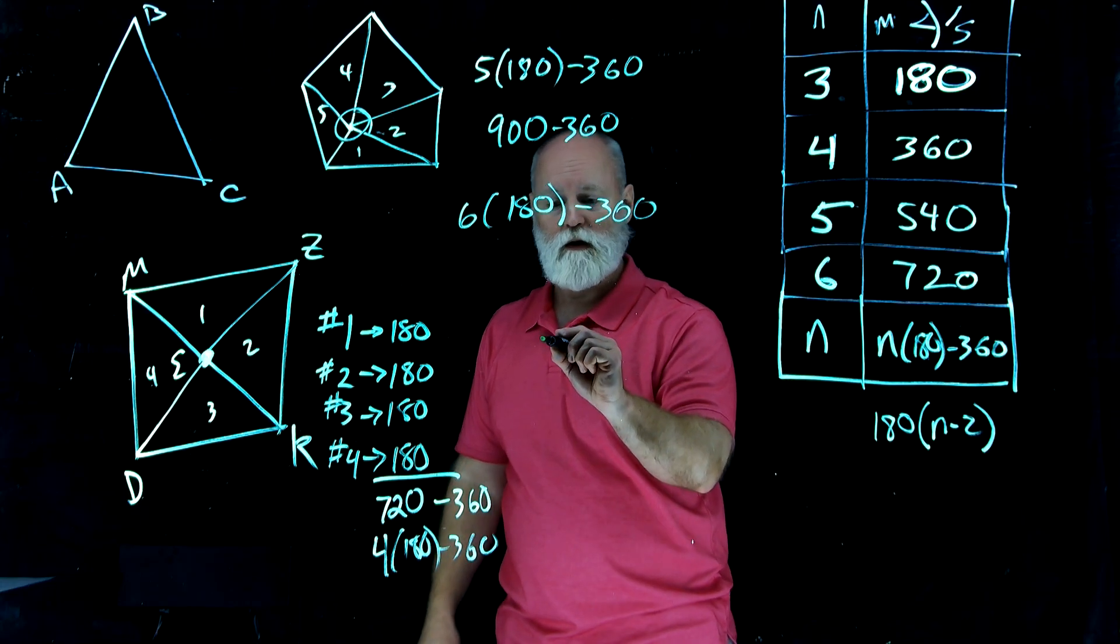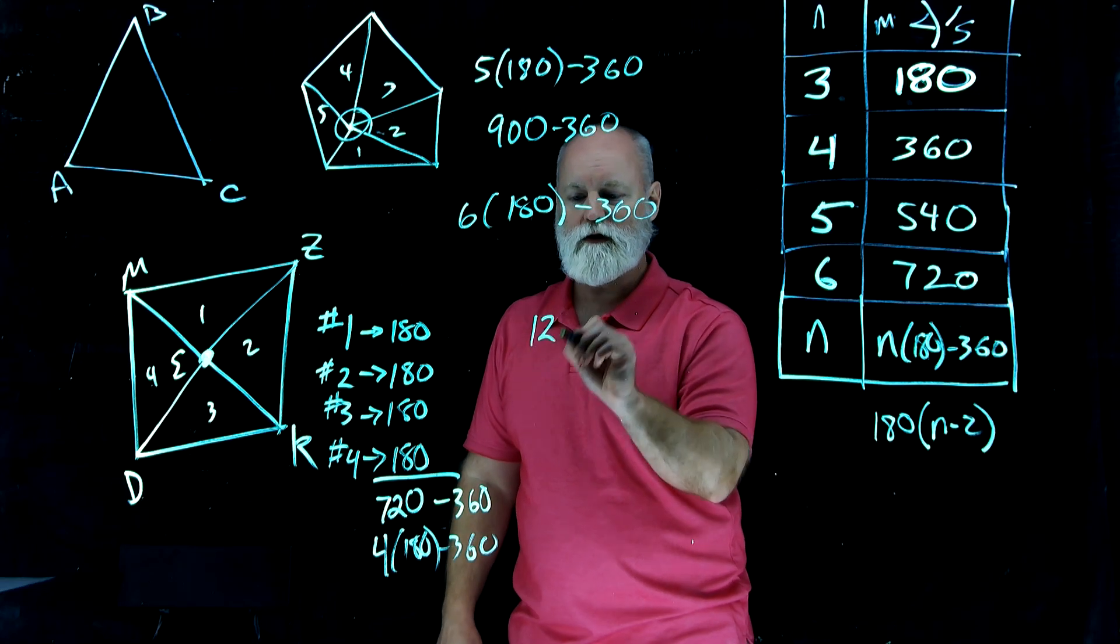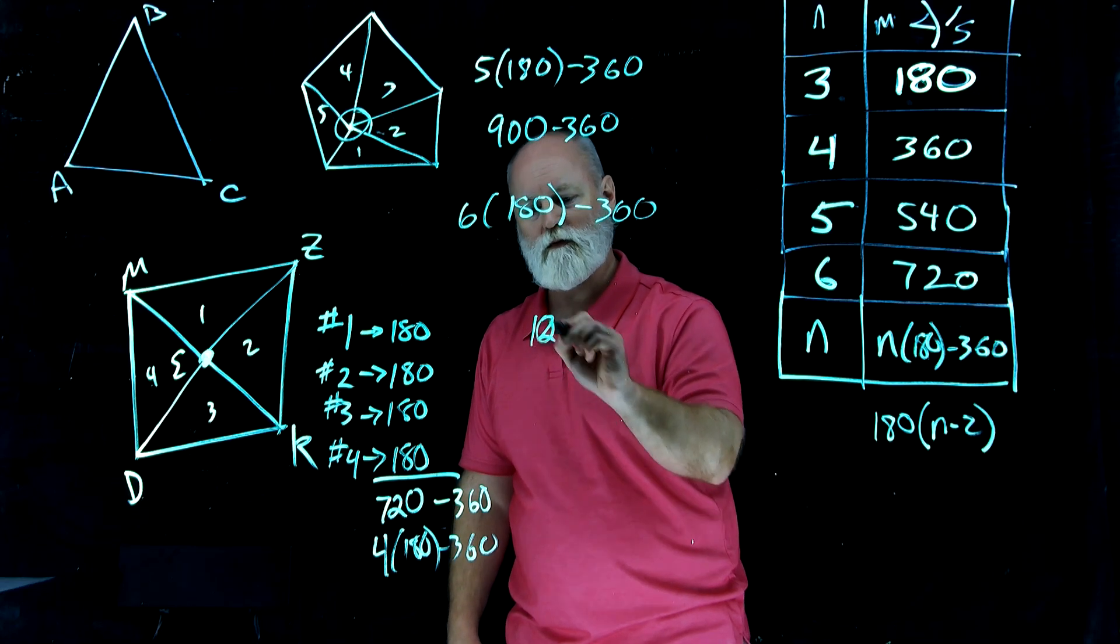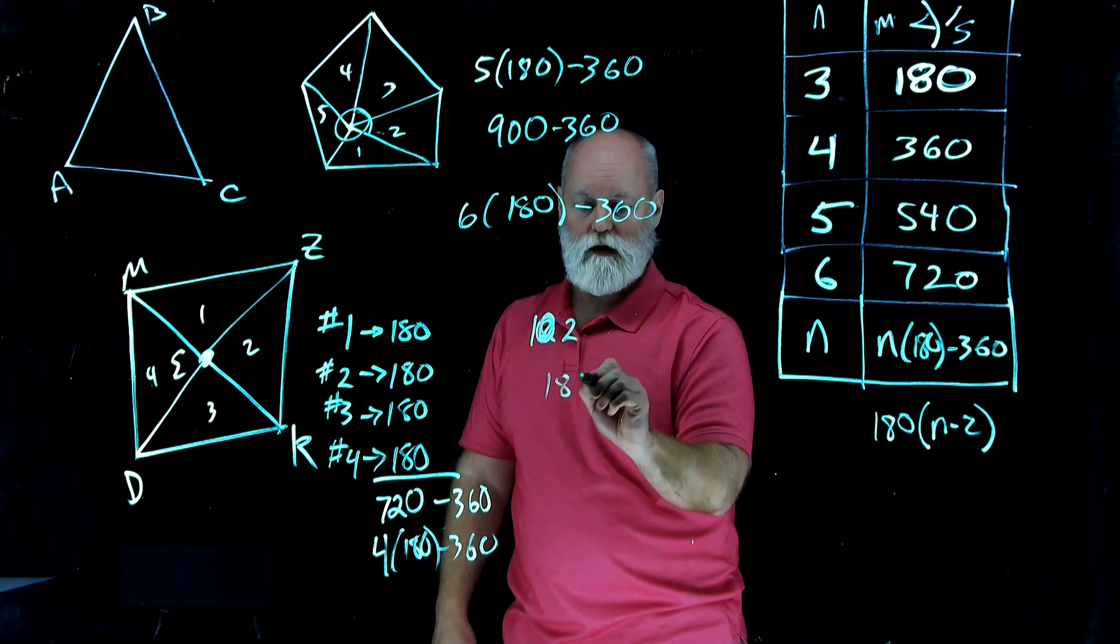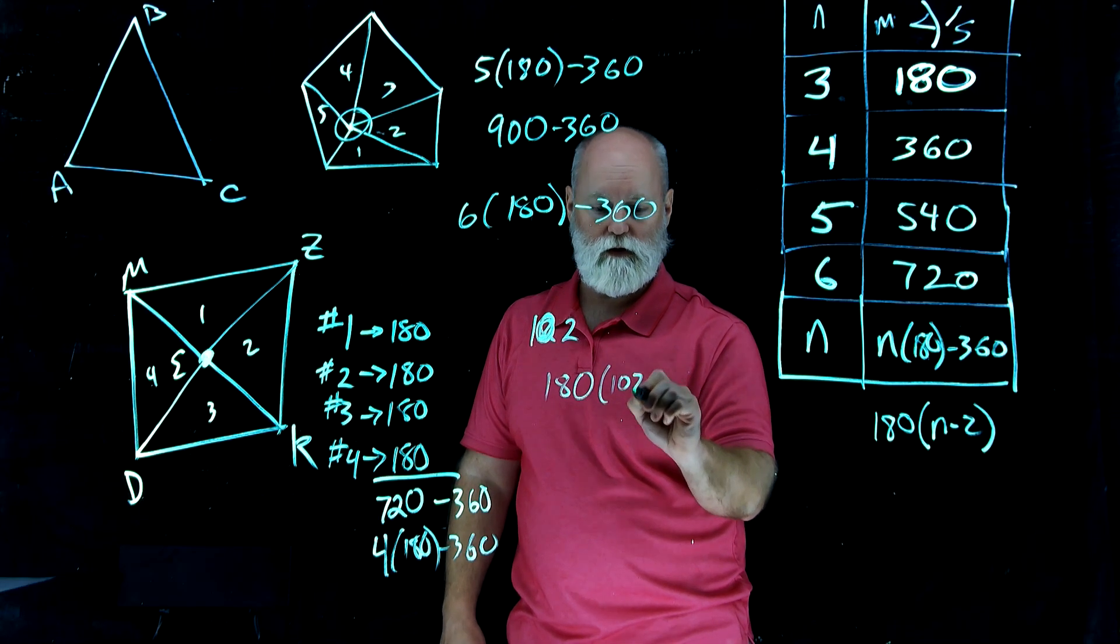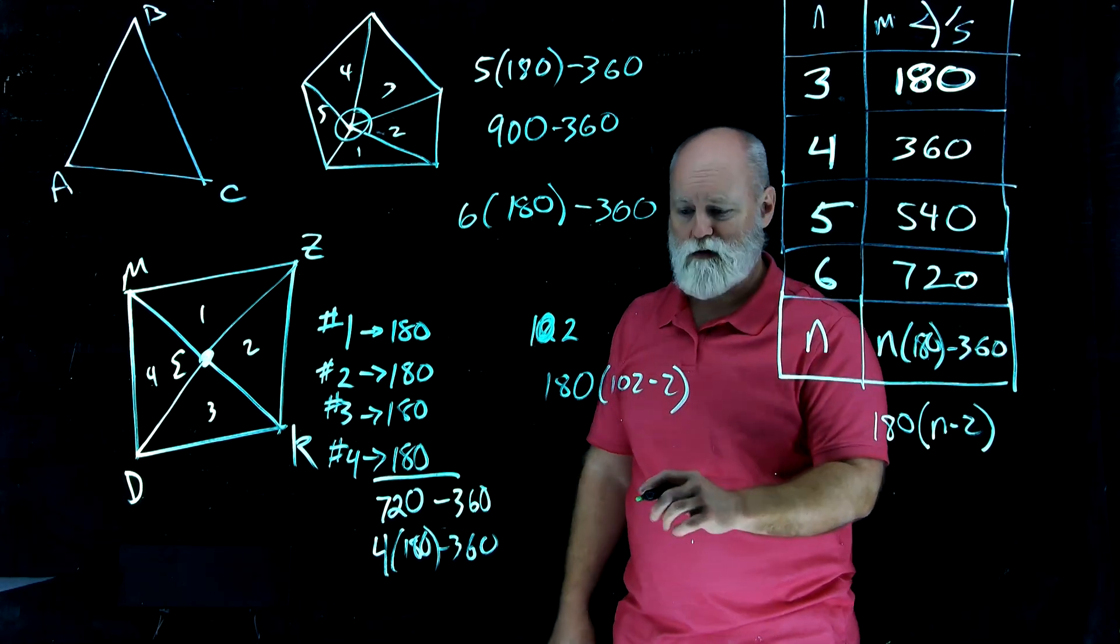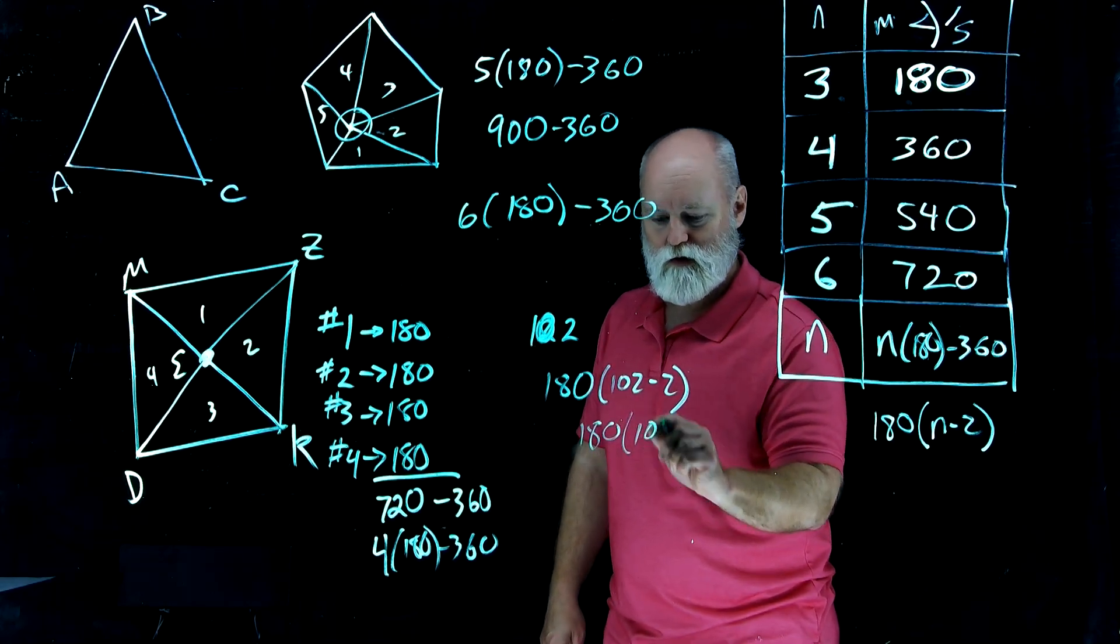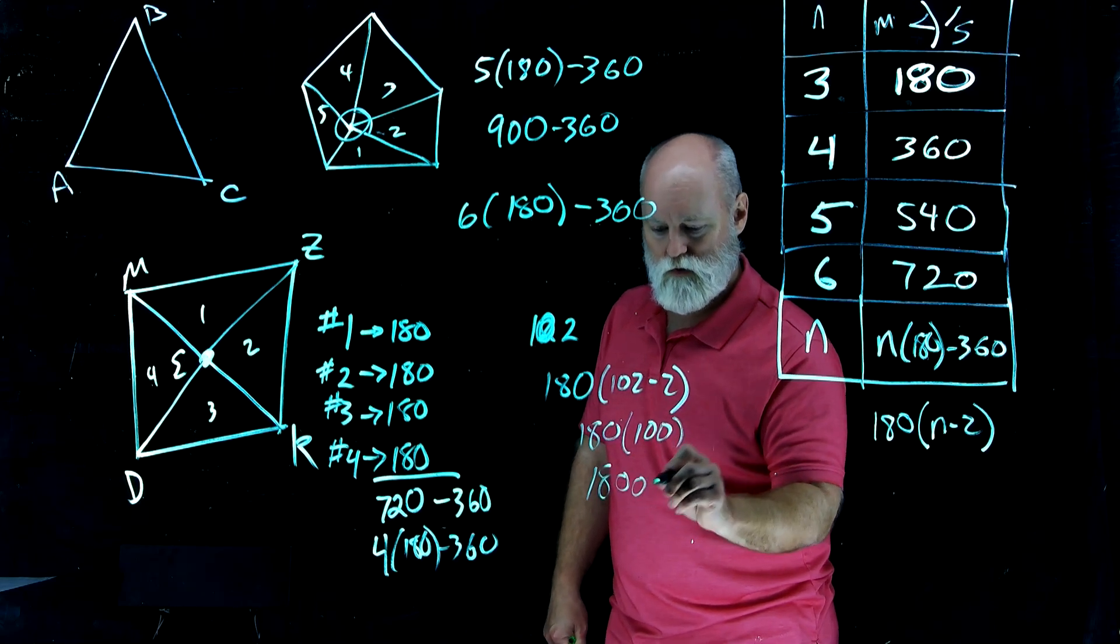So now we have this way of creating or figuring out how many angles. So if I asked you what, let's say, let's make the numbers nice. 102 sides. We have 102 sides. So that'd be 180 times 102 minus 2. I'm writing the video, so I can make the numbers easy on myself. So that's 180 times 100.